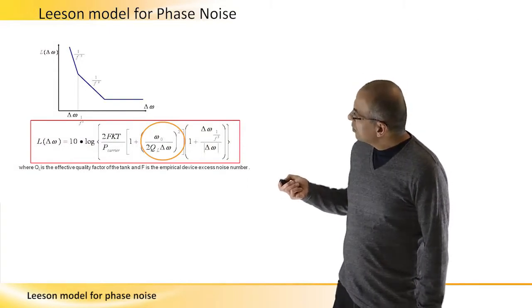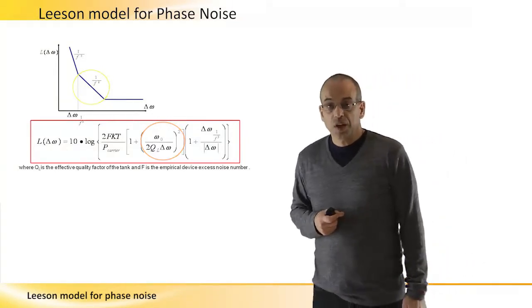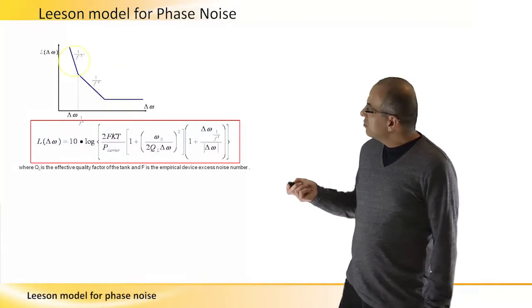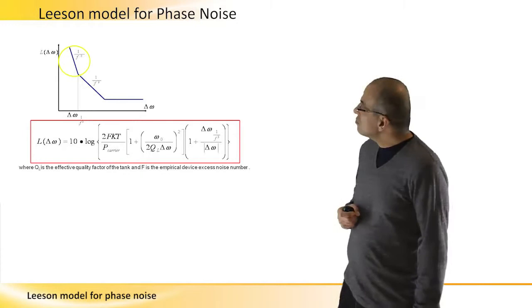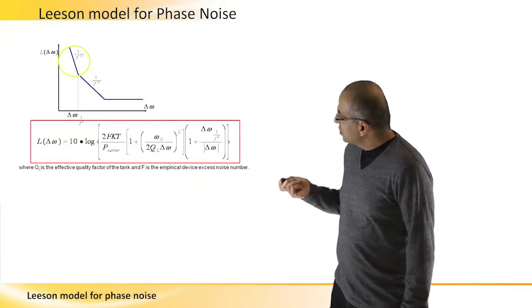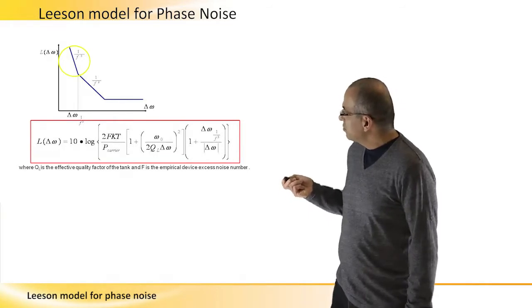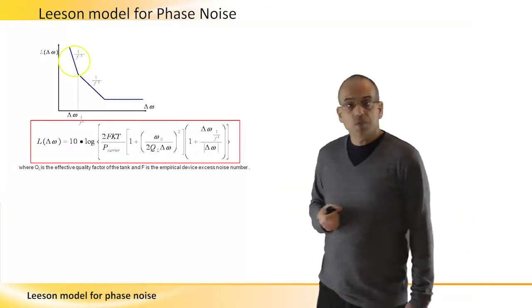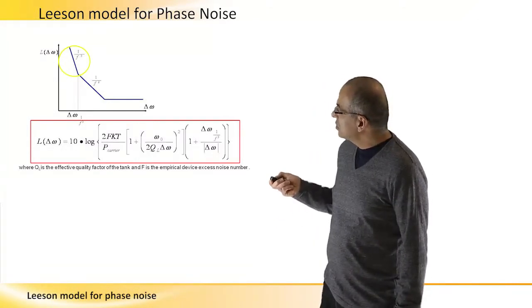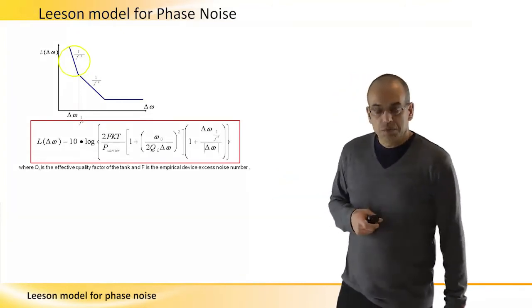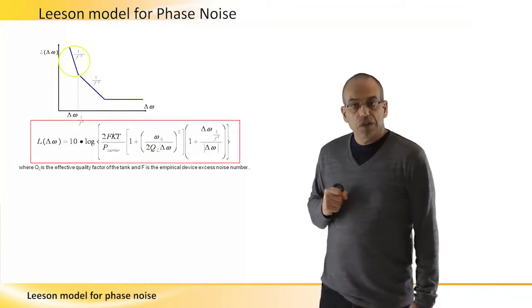Actually this expression deals with this region in frequency domain, and of course there will be some frequency where the ratio between this frequency and the distance from the carrier becomes significant. Then we will see the performance of the noise, or the phase noise, is more looking like 1 over f to the third.